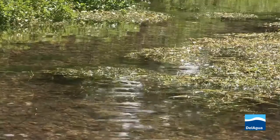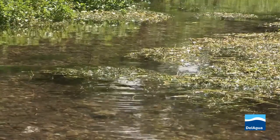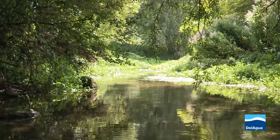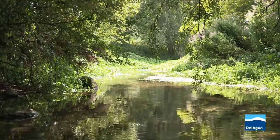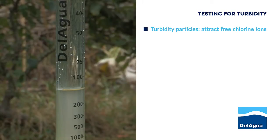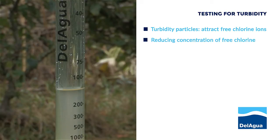High turbidity can increase water temperature as the particles absorb more heat. This increase in heat can affect water pH, which in turn affects how well any chlorine in the water will kill pathogenic organisms. Turbidity particles will also attract free chlorine ions, thus reducing the concentration of free chlorine.